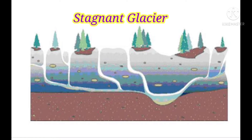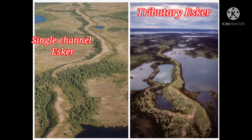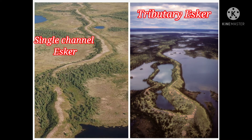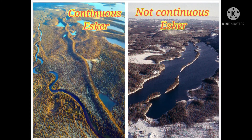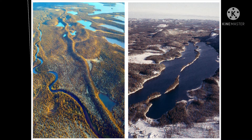We have to remember that Escar formation takes place when a glacier remains stagnant, because when a glacier moves, it would spread materials, so Escar cannot develop when the glacier moves. Escars may develop as a single channel or in branches with tributary Escars. Some Escars are continuous, but most are not — they have some gaps, because the sedimentation process may fail to take place along the entire length of the subglacial tunnel.